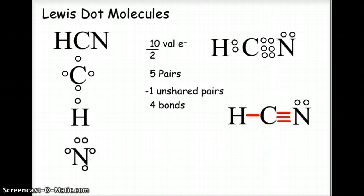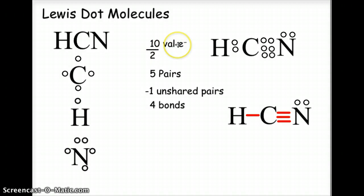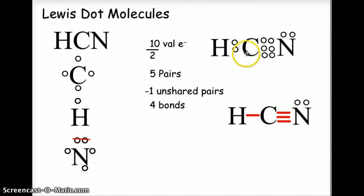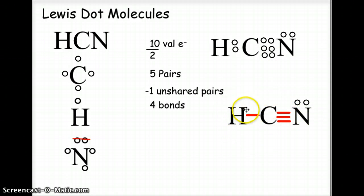Let's look at one last example: HCN, known as hydrogen cyanide. It contains carbon with four valence electrons, hydrogen with one valence electron, and nitrogen with five valence electrons, giving a total of ten valence electrons. Dividing by two tells us we need five pairs. Nitrogen has one unshared pair, so subtracting one from five tells us we need four bonds. One carbon electron pairs with hydrogen — that's one bond. The other three carbon electrons pair with three electrons from nitrogen, making a triple bond. The Lewis dot structure for hydrogen cyanide is H single bond C triple bond N, with two unshared pairs of electrons on the nitrogen.